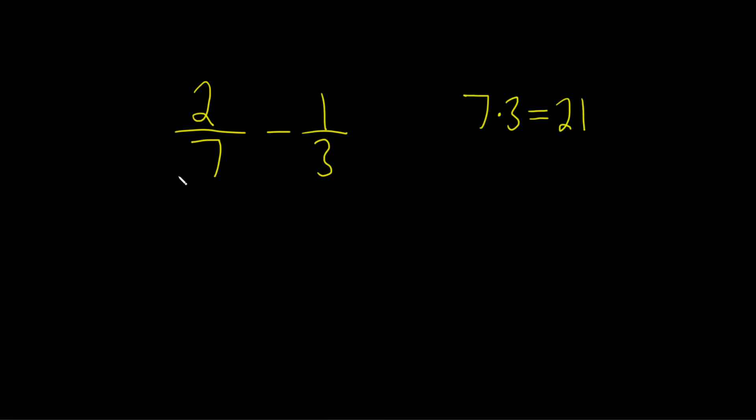So here on this one we'll multiply it by 3 over 3. And what that will do is it'll make the bottom piece 21. And here we'll multiply it by 7 over 7. Notice we're basically multiplying by 1. So we're really not doing anything.